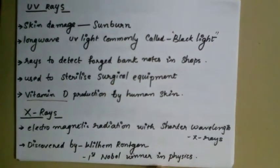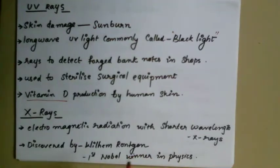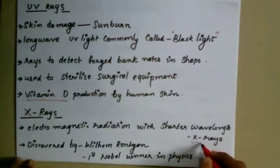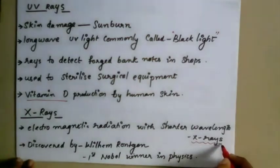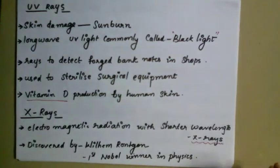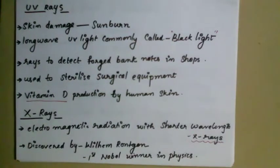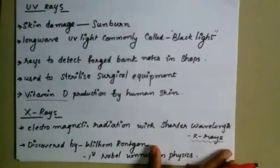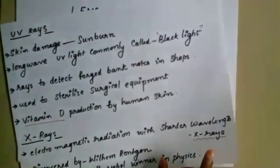X-rays are electromagnetic radiation with a shorter wavelength. They were discovered by Wilhelm Röntgen, who was the first Nobel Prize winner in Physics. X-rays have atomic-level wavelength and were a landmark discovery in physics.